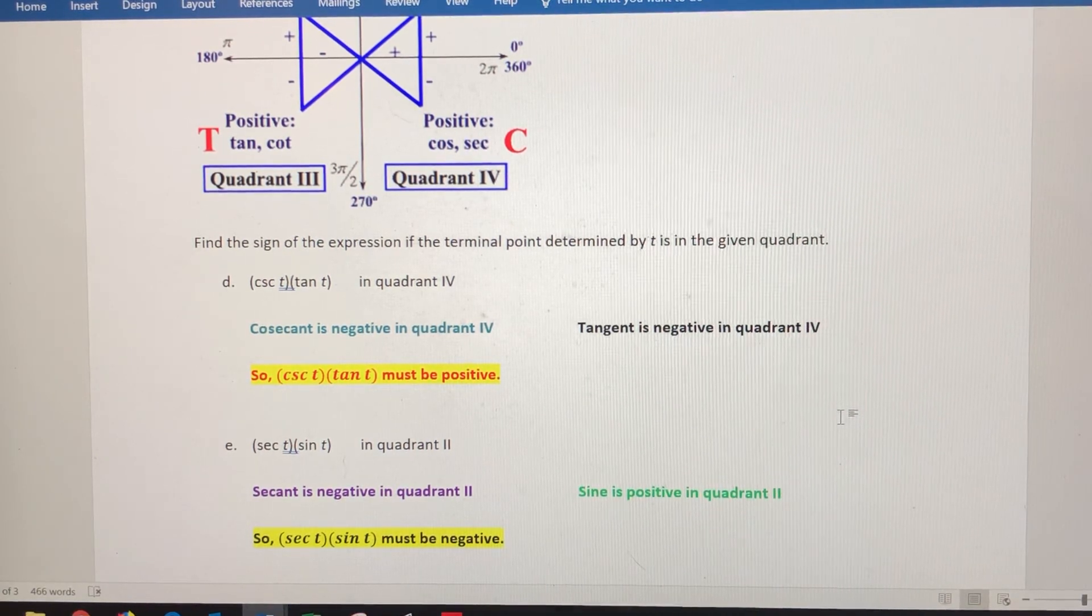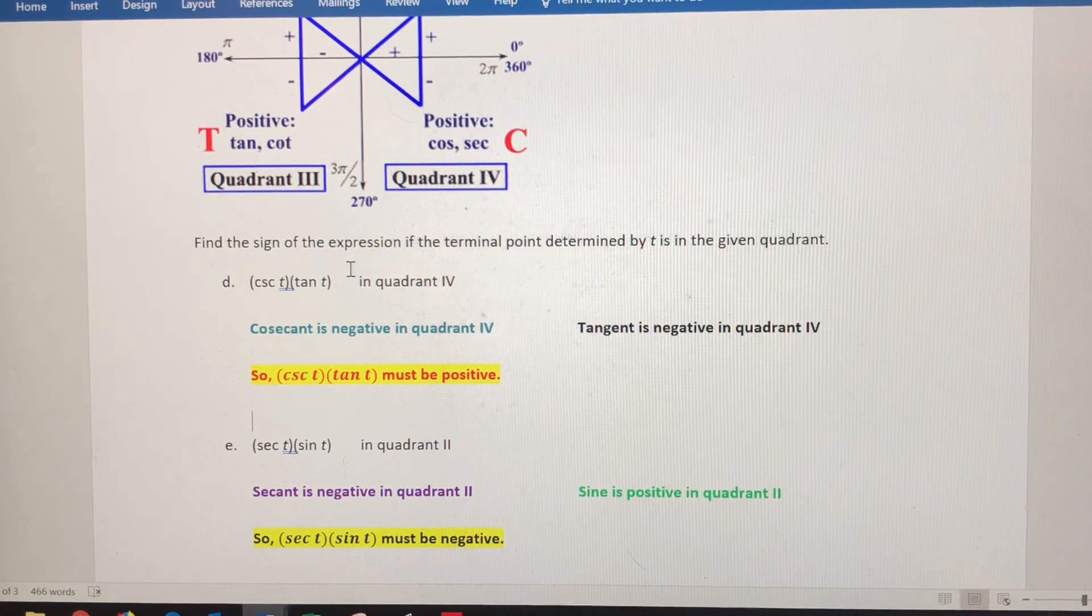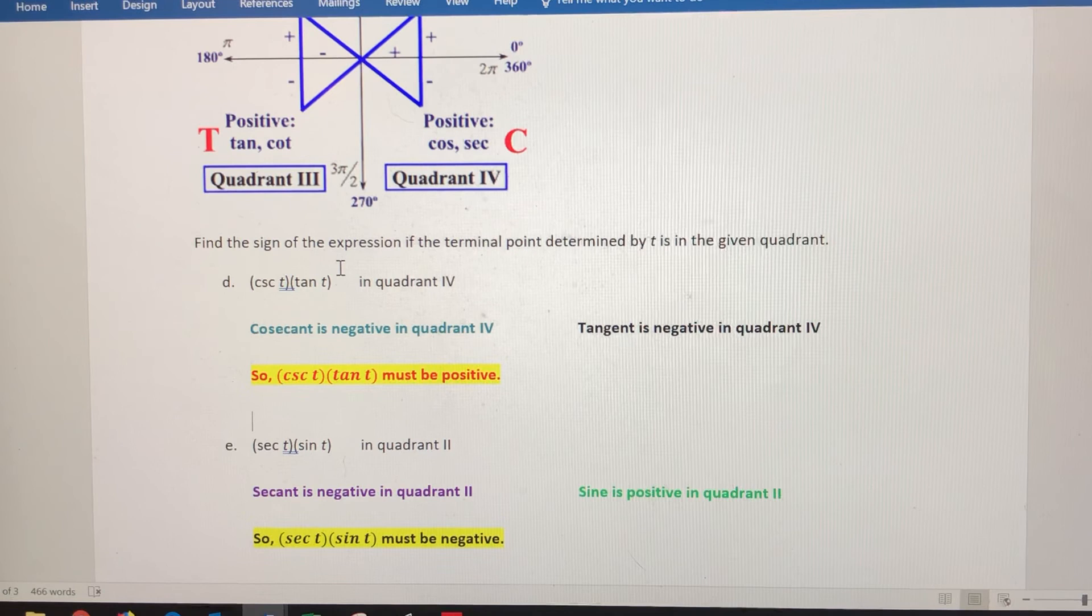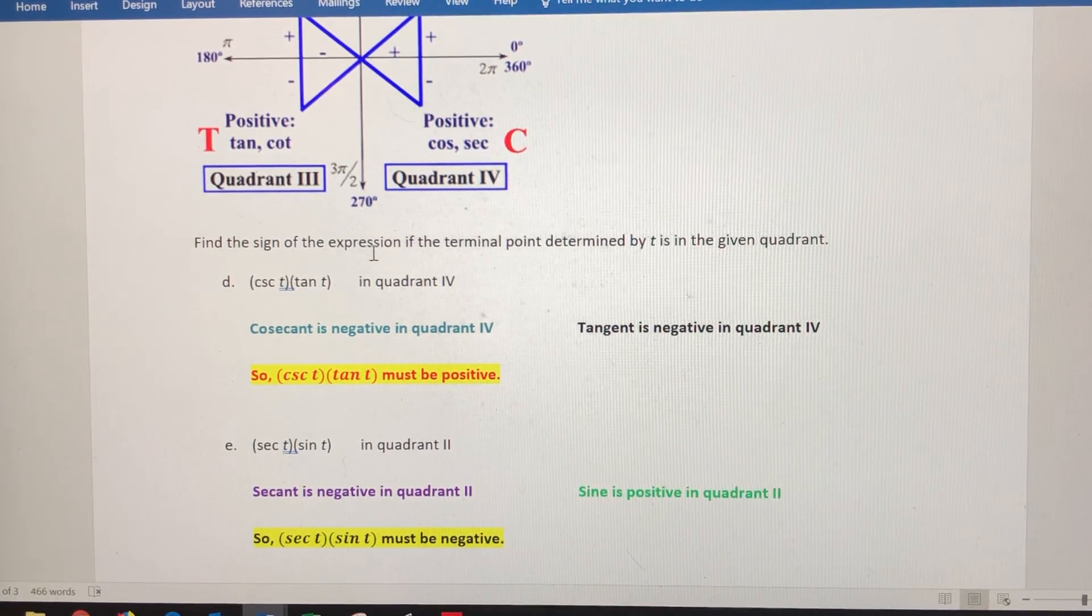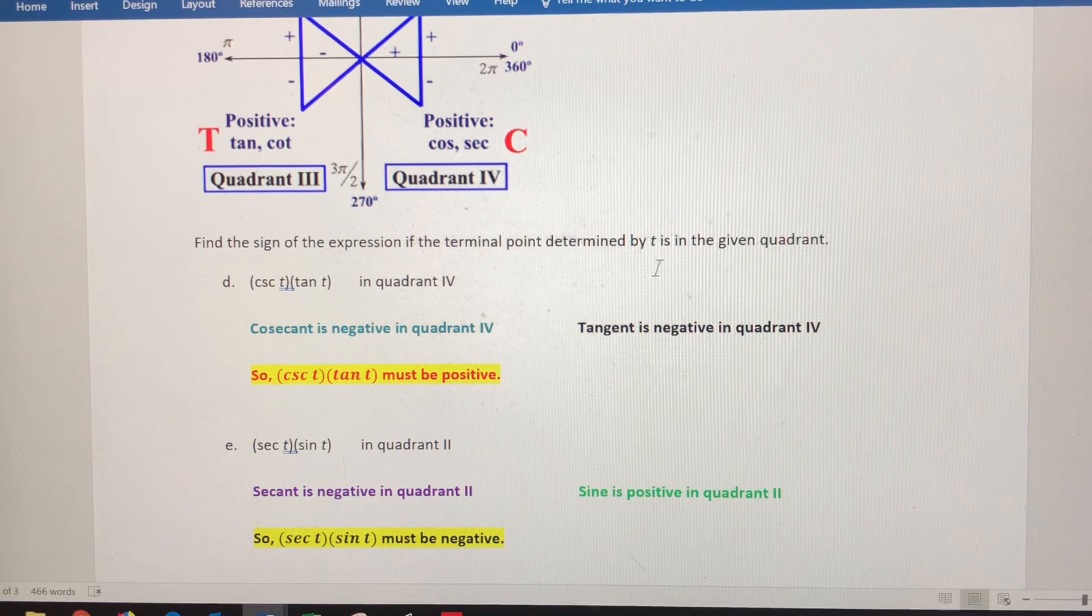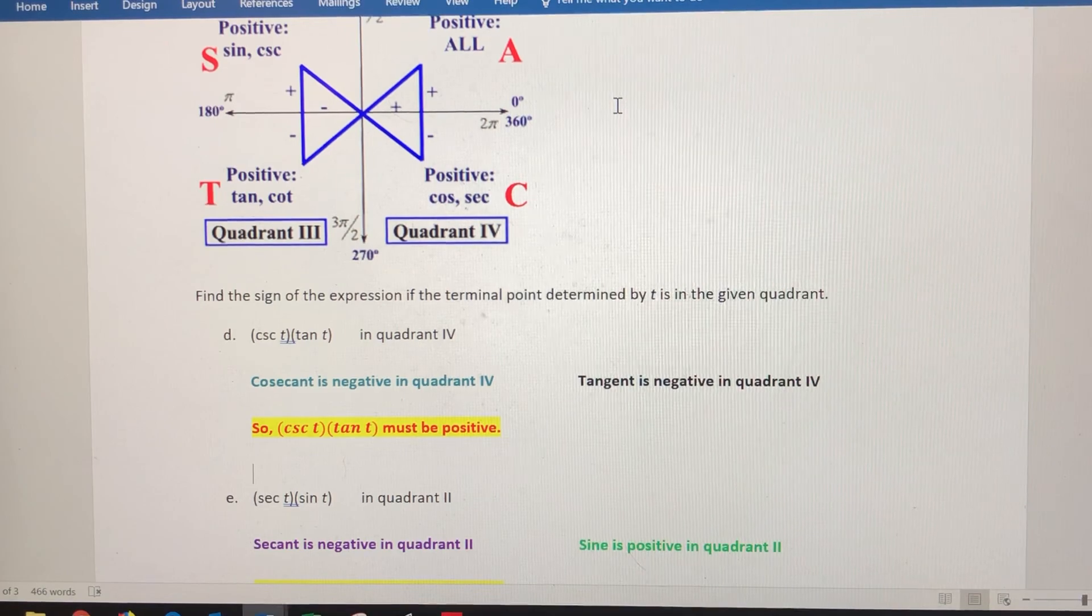That's how you use the signs of these trig functions to evaluate the sign of a product or quotient. Both examples were products, but you can determine the sign of any expression based on what trig functions are positive in which quadrants.